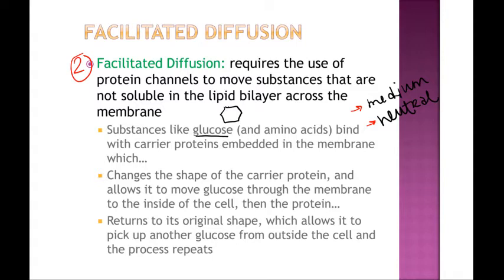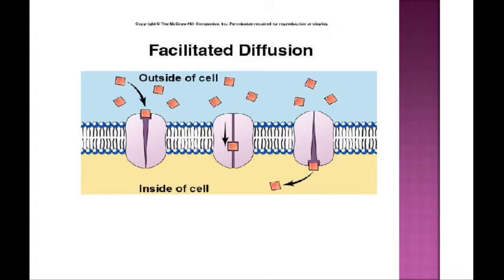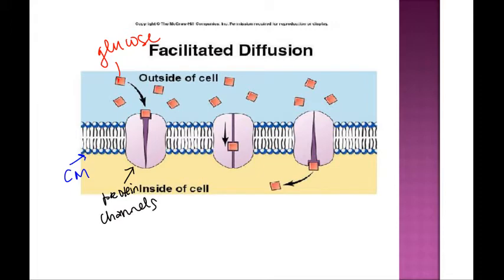These little boxes represent glucose going into and out of the cell membrane. Here is the cell membrane, and these are little protein channels that actually look like little doorways. When glucose on the outside of the cell comes up to the protein channel, there's a little binding site that is just the right size for the glucose, which tells the protein to shift its shape so the glucose can move inward and across the cell membrane, and then the protein channel returns to its original shape. The cell doesn't have to use any energy, but it does need doorways that are specific to each molecule.